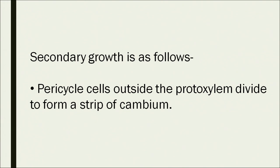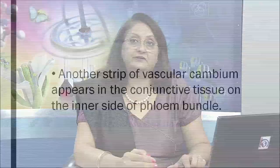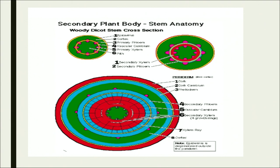Secondary growth is supported when pericycle cells outside the proto-xylem divide and form a strip of cambium — cells having the ability to divide, i.e., meristematic cells. These cells divide and cut new cells on the outside and inside. Vascular cambium appears in the conjunctive tissue on the inner side of the phloem bundle. The plant begins green and young but becomes woody and strong over time through secondary growth happening in both root and stem.